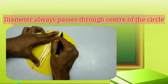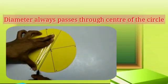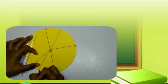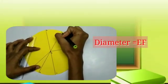And diameter always passes through the center of the circle. E, F is the diameter.